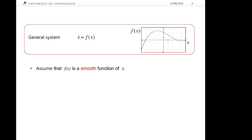We make an assumption that our function f is smooth. We also observe that when the function f crosses the 0 axis, we have a fixed point. So by solving the equation f equal to 0, we find the fixed point, which we denote as x star.